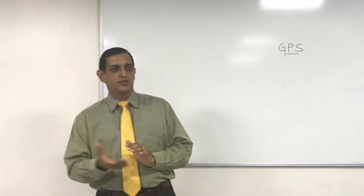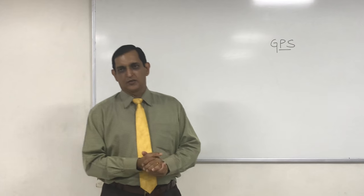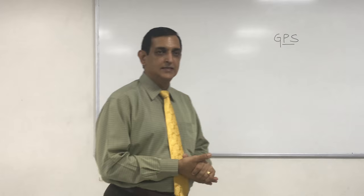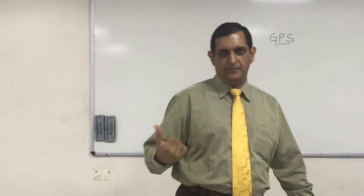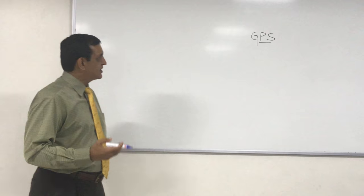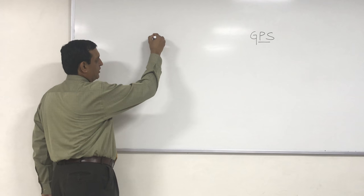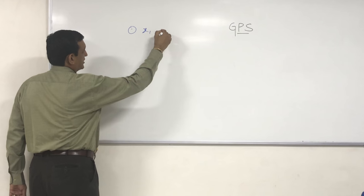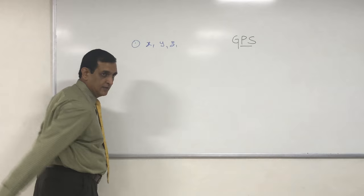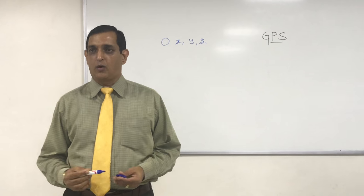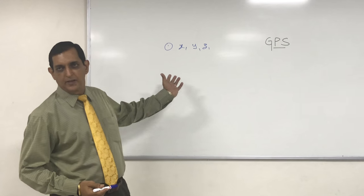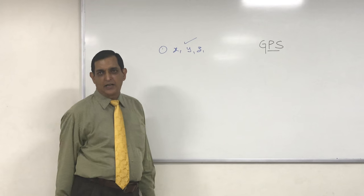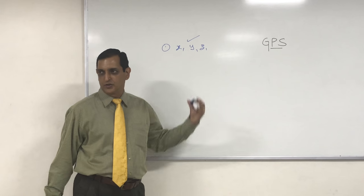Having got the navigation message, the next thing is position fixing — ultimately what we need is position. The satellite orbiting at any particular position in space will have three coordinates: X1, Y1, and Z1 in terms of latitude, longitude, and altitude. Any satellite will have these three, and these are known because the satellite is giving us this information.